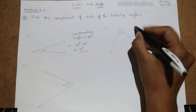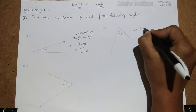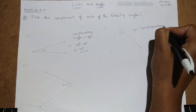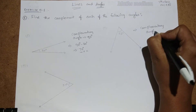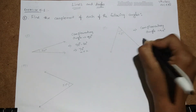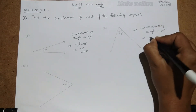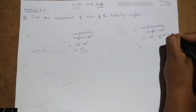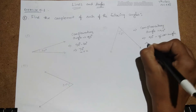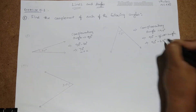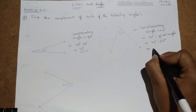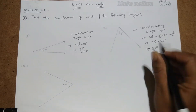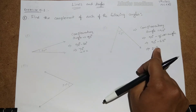Similarly, the complementary angle is equal to 90 degrees. So, 90 degrees minus the given angle: here 90 degrees minus 63 degrees gives us 27 degrees. This 27 degrees is the complement of this given angle.